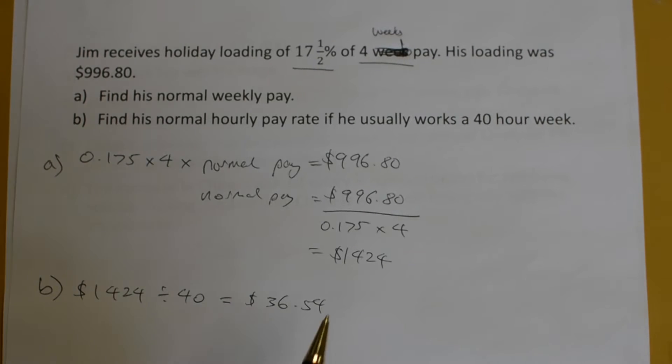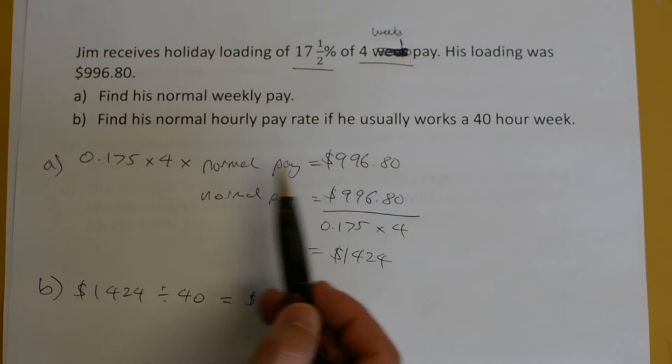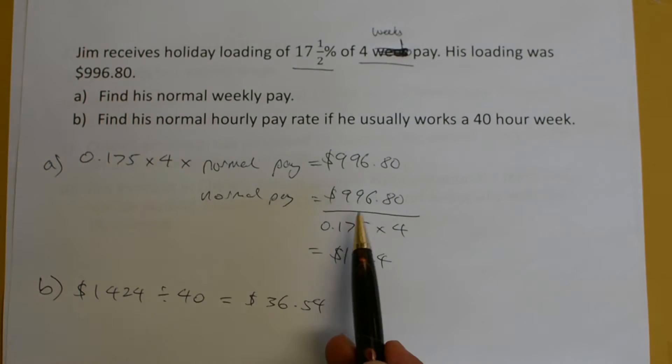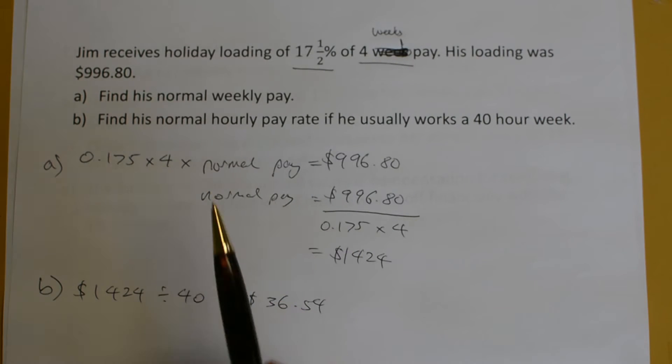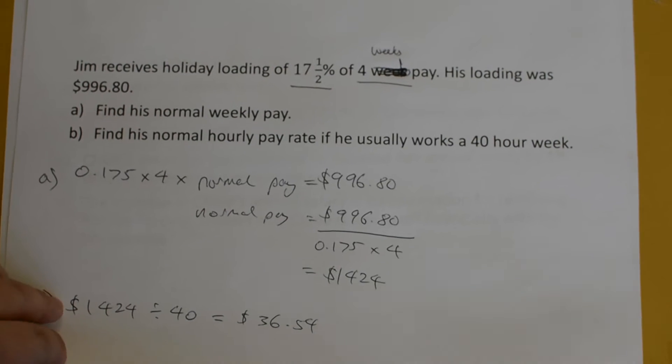His normal weekly pay was found by getting his holiday loading divided by your percentage wage of holiday pay, and you divide by the number of weeks. To find the hourly rate of pay, then you divide the amount by how many hours you work.